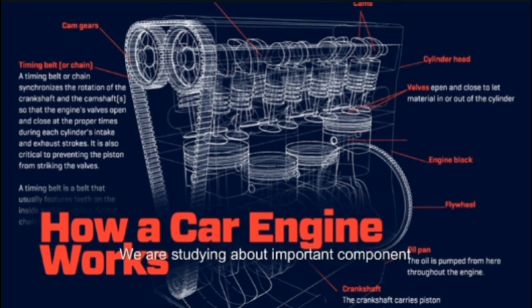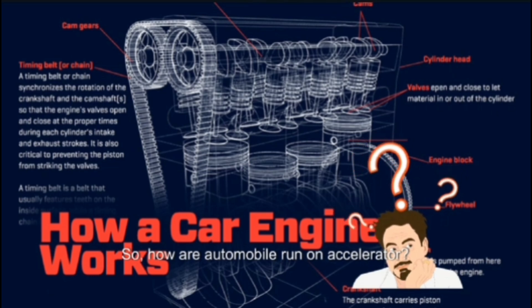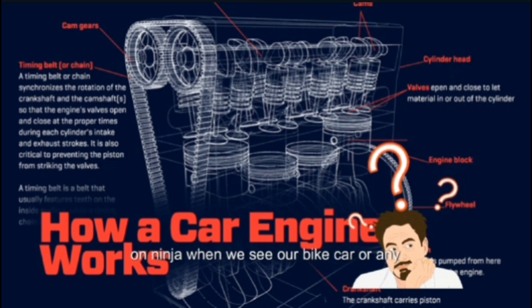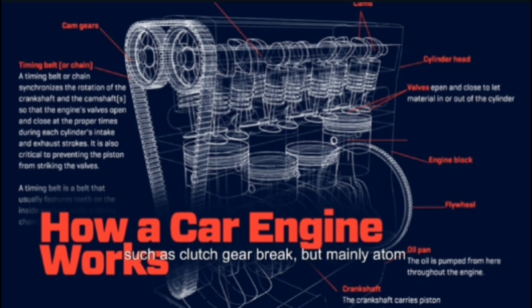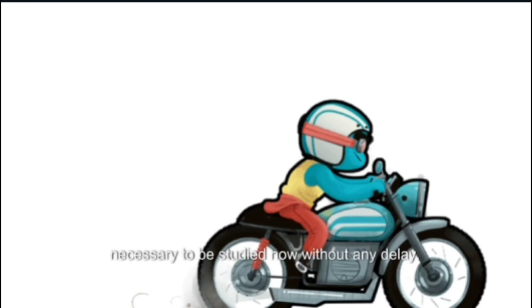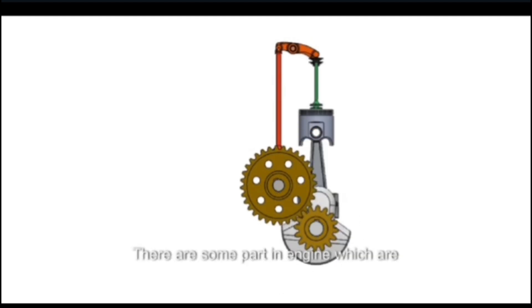Hello everyone, today we are studying an important component of automobiles. When we see our bike, car, or any other vehicle, we see outer components and also use them, such as clutch, gear, and brake. But mainly automobiles work on the engine. Basically, we are trying to say that engines are necessary to be studied. Without any delay, we will proceed to see the working of our engine.